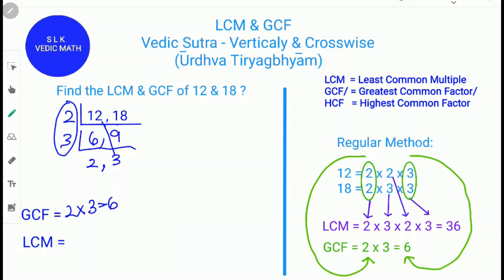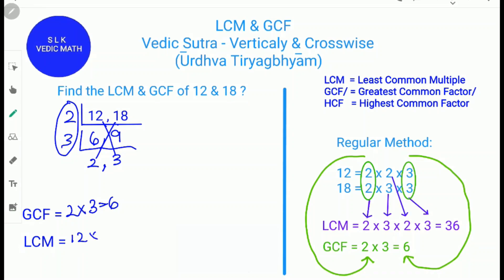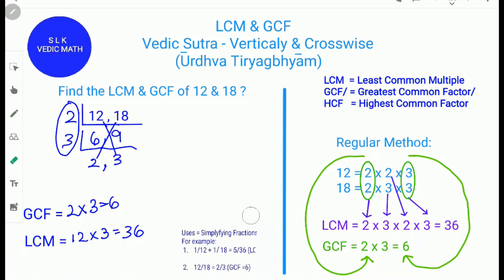For the LCM, we cross multiply: 12 times 3, or 2 times 18 — they both give the same answer, which is 36. So 12 times 3 is 36, and the LCM is 36.